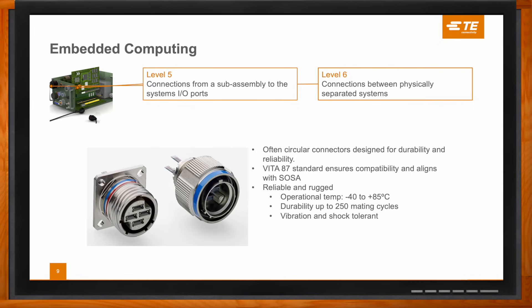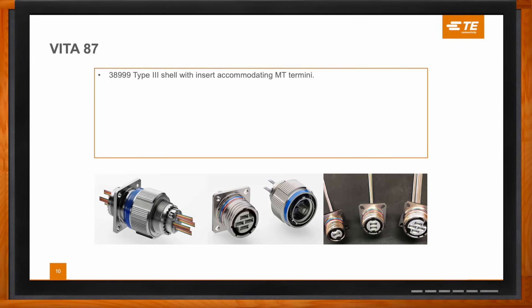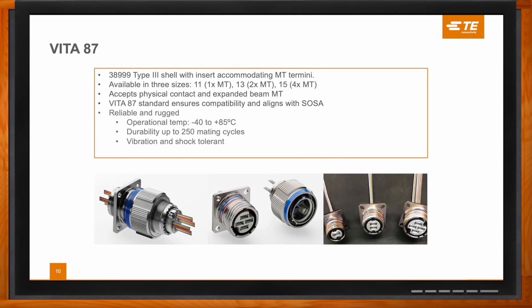What kind of specifications are included in these levels? It's based on the 38999 style 3, so it comes with the sheer ruggedness of that shell. But of course, this is fiber optics, so there's a separate set of requirements. Typically you'll see minus 40 to 85 Celsius for operational temperature. We have durability up to 250 mating cycles, and this is all tested to MIL-810 vibration and shock. Should you need more than 250 mating cycles, everyone is working on getting expanded beam incorporated as well. We offer the VITA 87 with standard MTs, and to further improve durability, we also offer it in expanded beam.